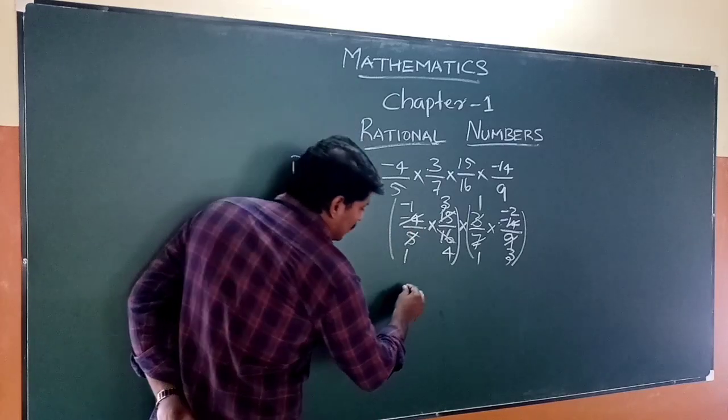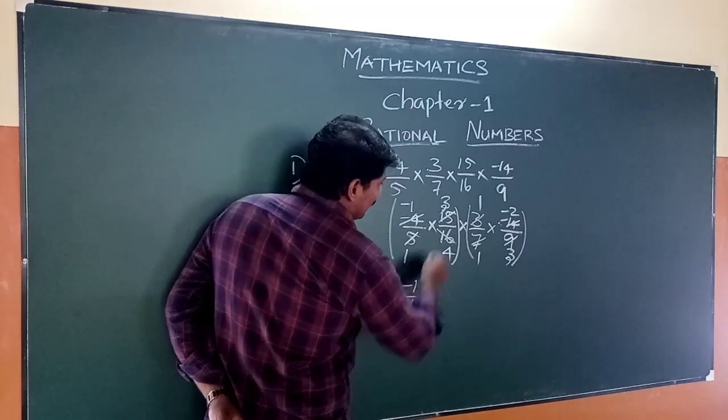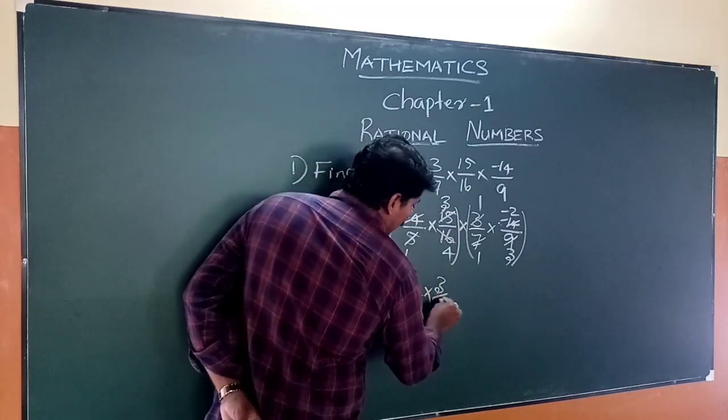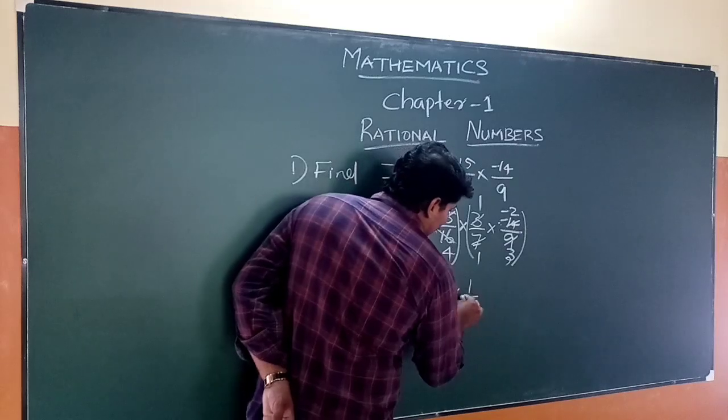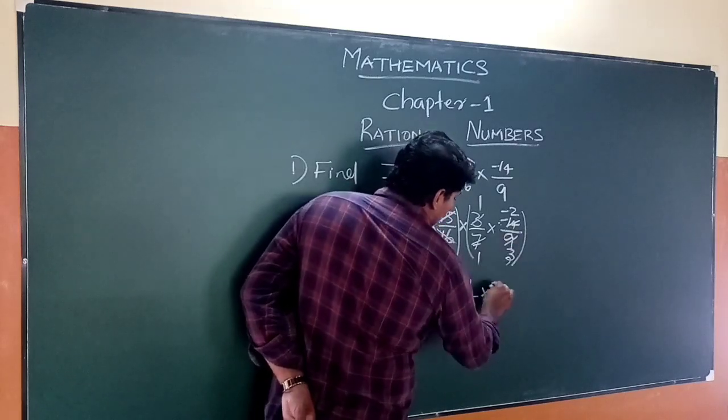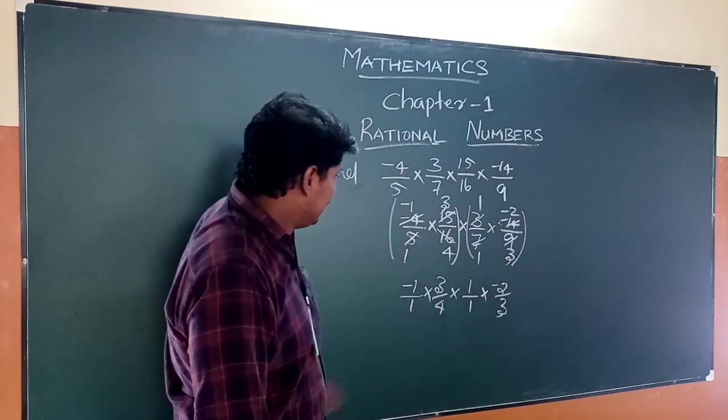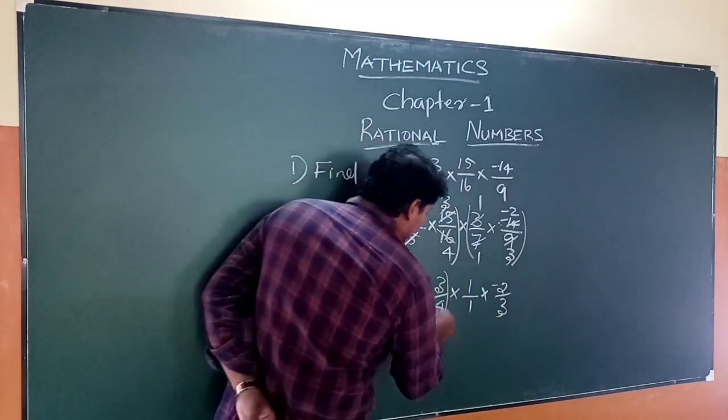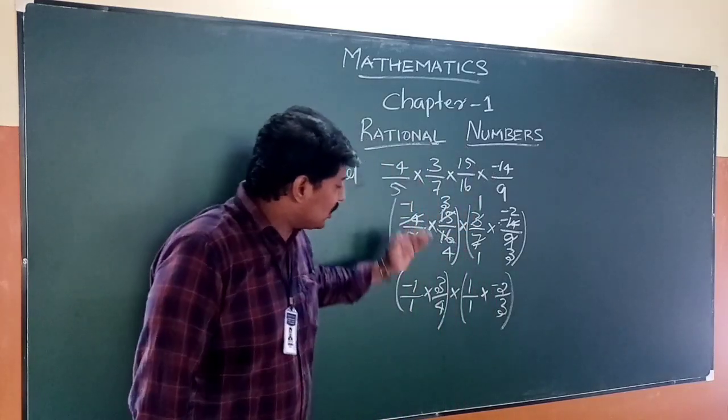After all the simplification, we get: (-1/1) × (3/4) × (-2/3). This is the simplified form.